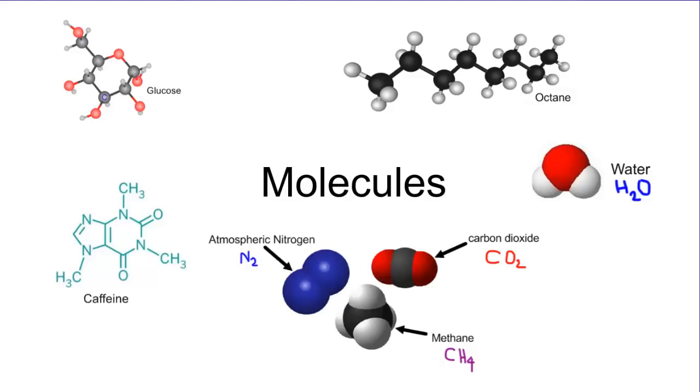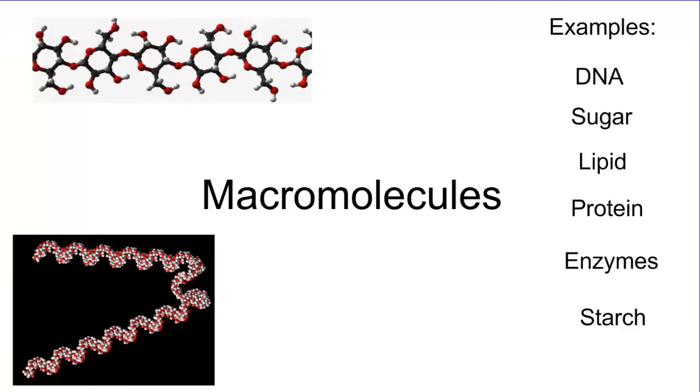As we get bigger in the levels, you can see that the things we talk about are going to be combinations of those levels below it. Macromolecule is really doing the same thing. The two pictures show here's a molecule that should be familiar, it was glucose. We've taken a bunch of glucoses and combined them together to form a long chain, a bigger molecule.